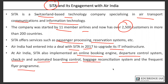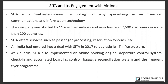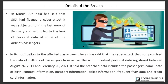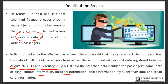Air India confirmed that the data leak involves personal data of airline passengers. The data was leaked from stored records covering the period of August 26, 2011 to February 2021, and includes passengers' names, date of birth, contact information, passport information, ticket information, frequent flyer data, and most importantly, credit card information.